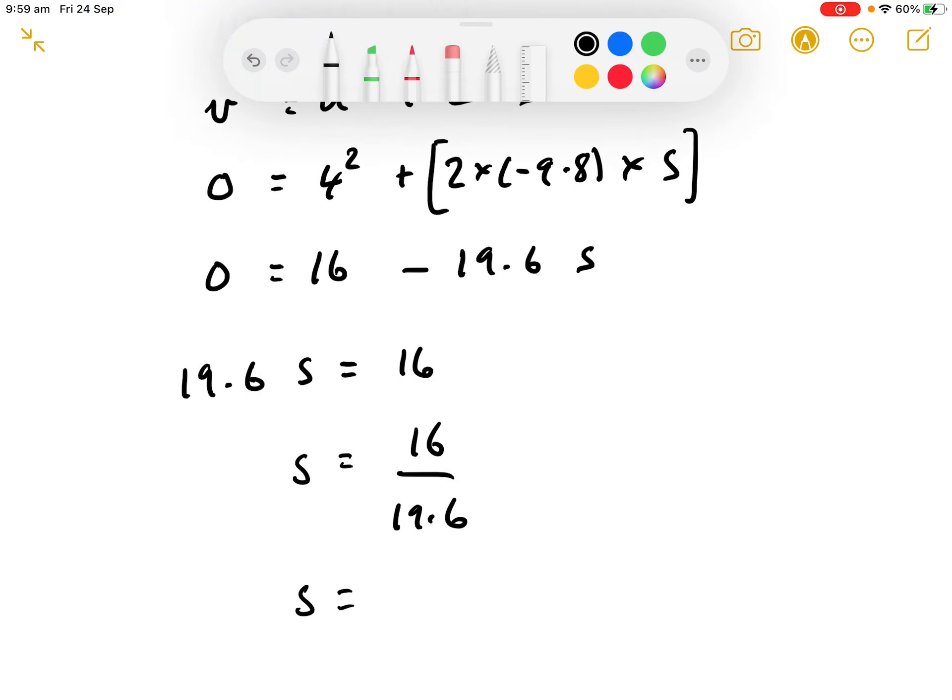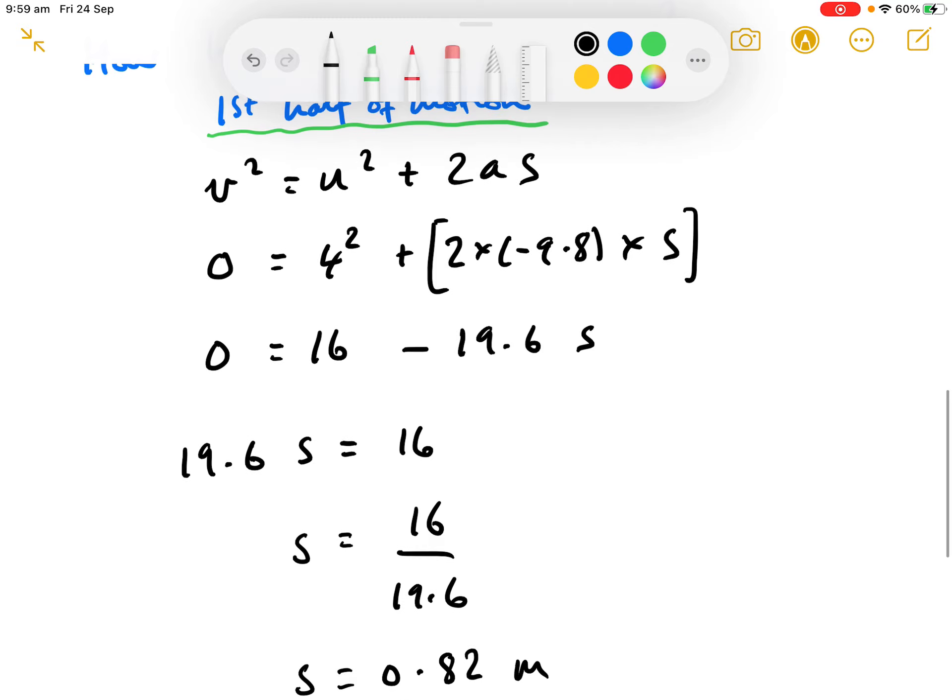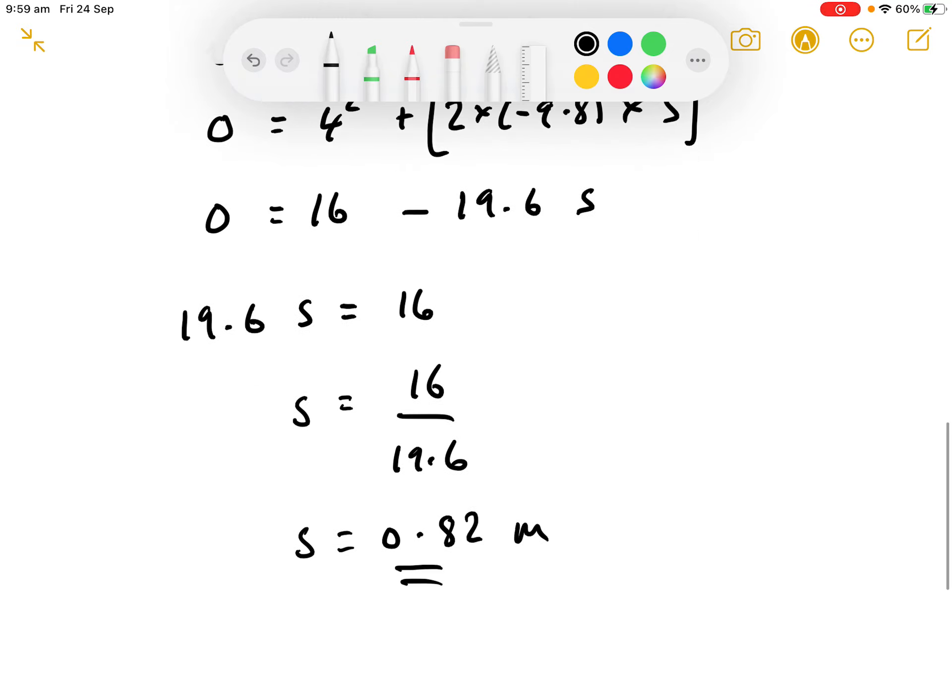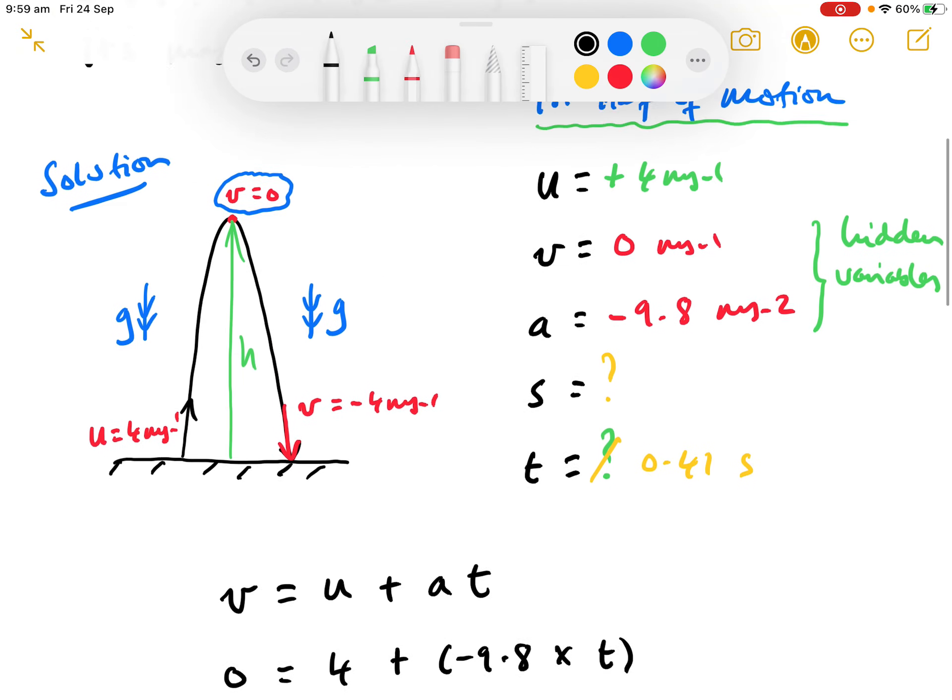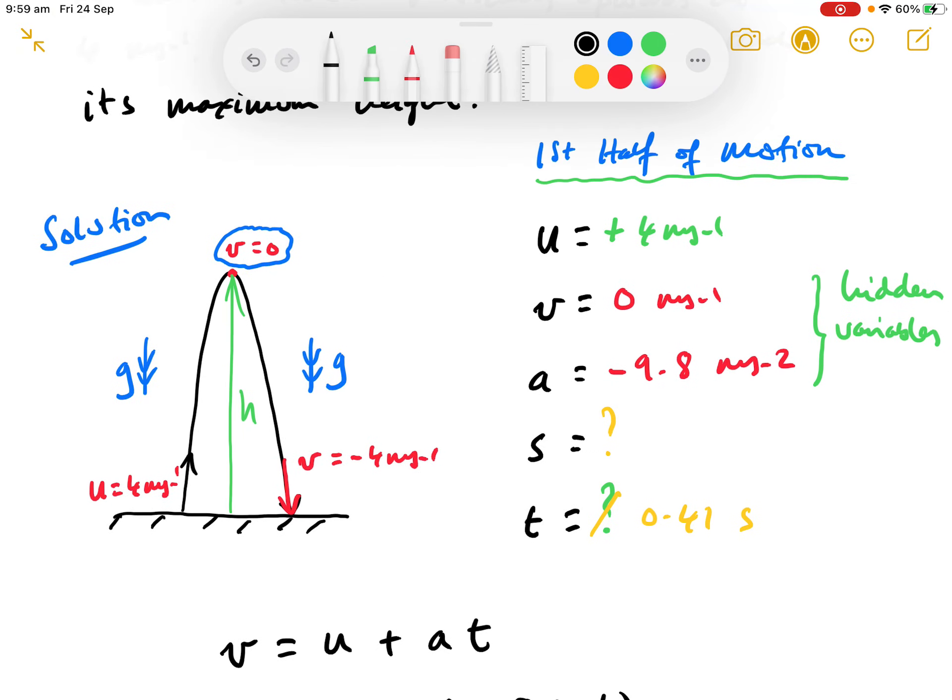So, s equals 0.82 meters. And if that s doesn't come out to be positive, then there's something wrong. Okay. So, that's how you apply the equations of motion to solve some simple problems. And here ends the note.